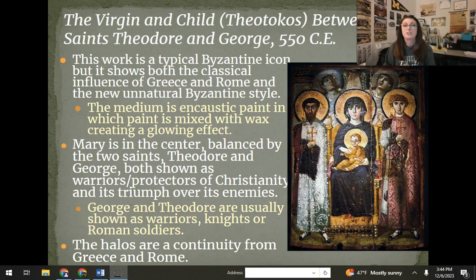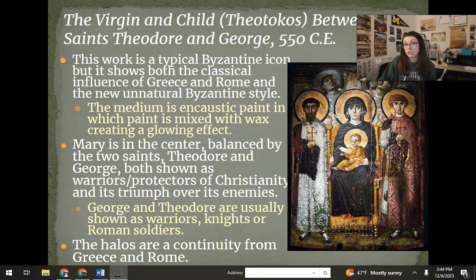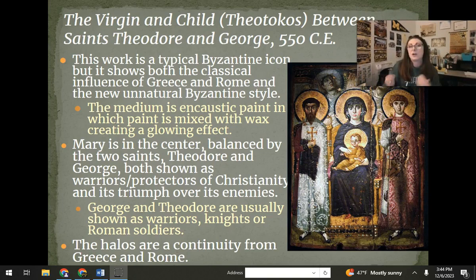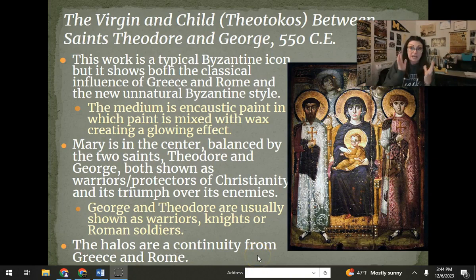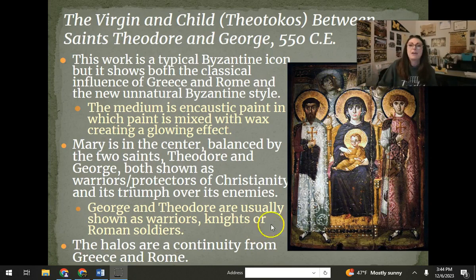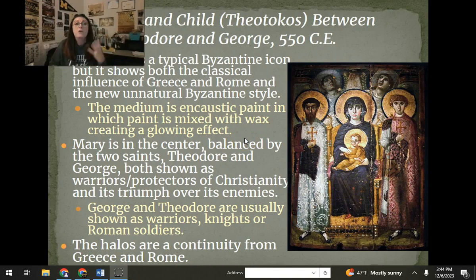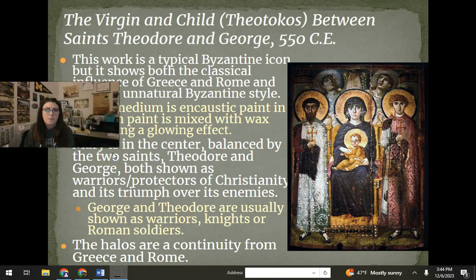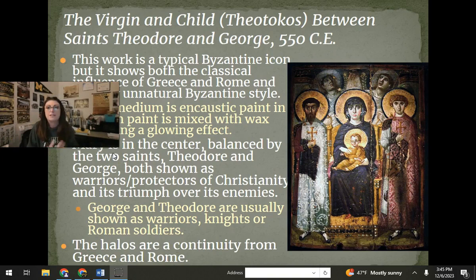A piece that shows the importance of Mary and icons in the Byzantine Empire is the Virgin and Child — she's the Theotokos, the mother of Jesus, shown with the baby — between Saints Theodore and George. This icon is really interesting: it's made of a medium called encaustic, which is paint mixed with wax, and when painted it creates a glowing, luminous effect that works perfectly because it creates a heavenly appearance. Mary is sitting in the middle, and on each side are Saints Theodore and George, who fought for their faith — one died for his faith. One is shown as a Roman soldier, and they're wearing the symbol of the cross on their chest, like warriors, there to show the triumph of Christianity after Christians had been killed by the Romans.